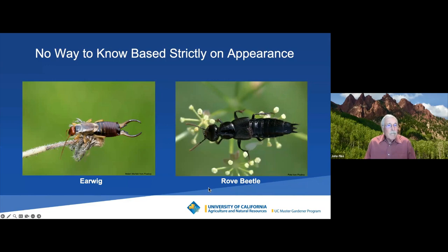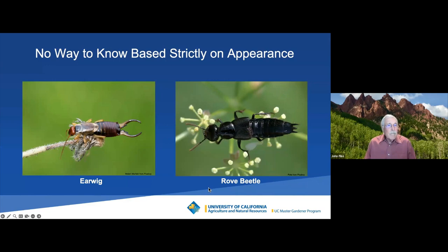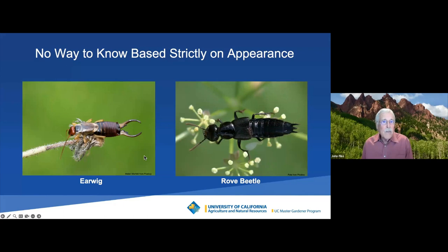Here's my last example. This is an earwig — most people know them, they call them pincher bugs. Earwigs can be real pests, especially to young seedling plants. This is called a rove beetle — a good guy — it eats the babies of the earwig, among other things. If you saw them running along your flower bed dodging into the mulch, you may not be able to tell them apart just by the way they look. You kind of have to know them.